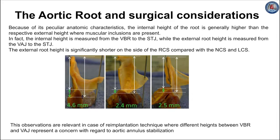The internal root height is usually higher than the respective external height. The internal height is measured from the virtual basal ring to the sinotubular junction, while the external root height is measured from the ventricular-arterial junction to the sinotubular junction. In this setting, the non-planar nature of the ventricular-arterial junction significantly affects these measurements.